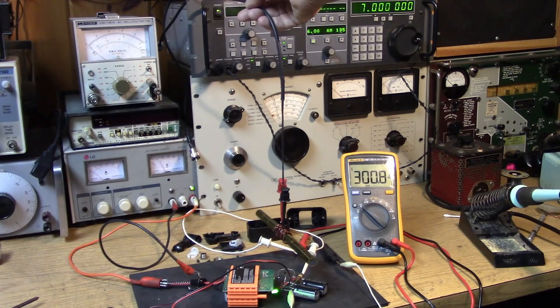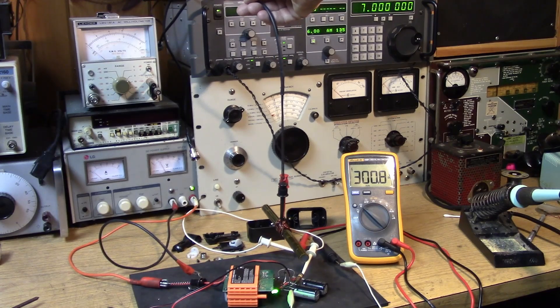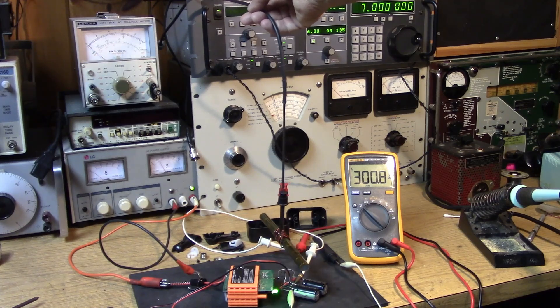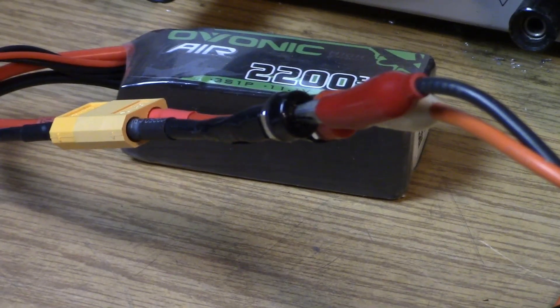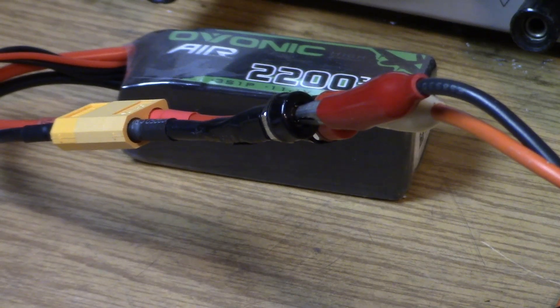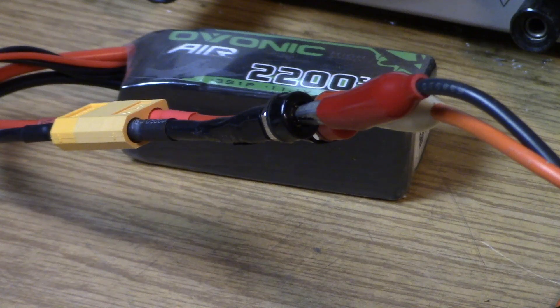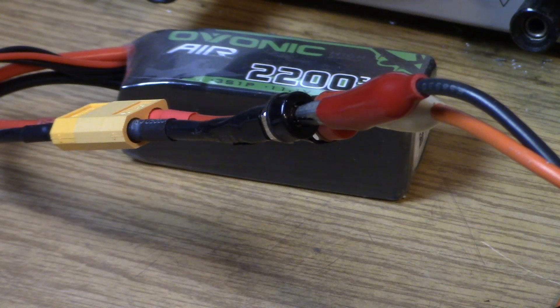And maybe that's a feature of using a 60 hertz converter rather than a high-frequency converter. We are now hooked up to the 2200 milliamp hour drone battery. And we're going to see if the drone battery can supply the 300 volts.